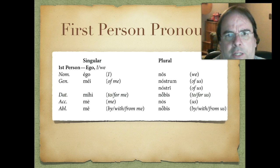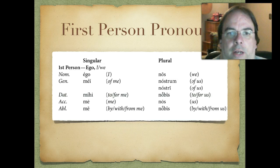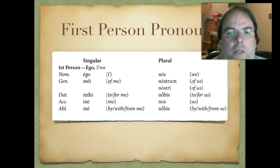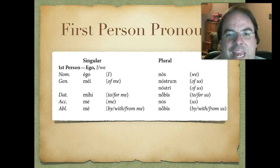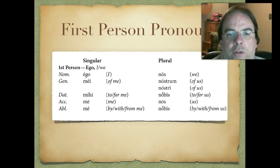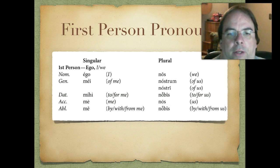Let's take a look at how these decline. It's irregular — it's going to be one of those things you'll have to memorize. Let's look at the first person personal pronouns. There are separate singular and plural forms. In the singular we have ego, I. The genitive would be mei, of me. Dative singular, mihi, to or for me. Accusative, me, which just means me — we've seen that one before. And ablative, also me, by, with, or from me.